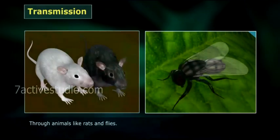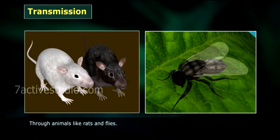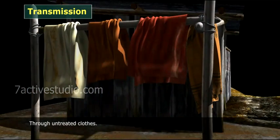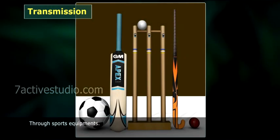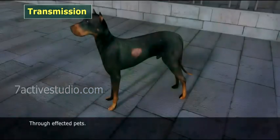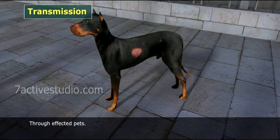Transmission: through animals like rats and flies, through untreated clothes, through sports equipment, and through affected pets.